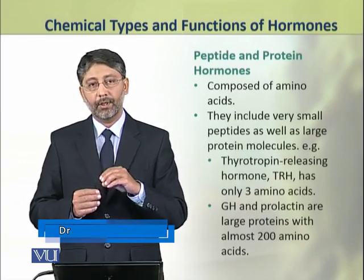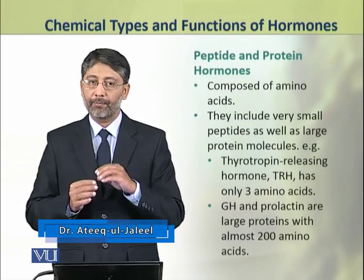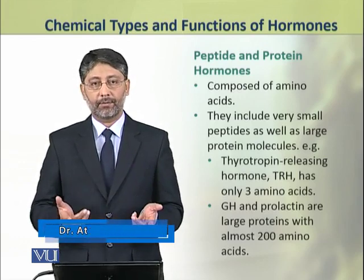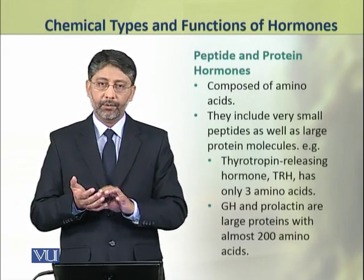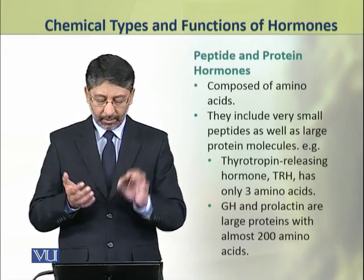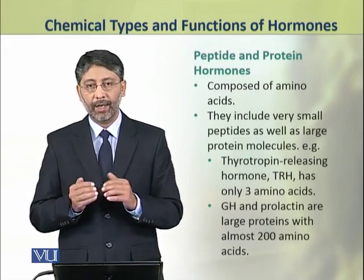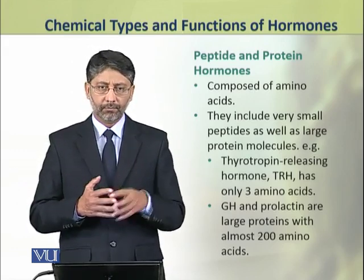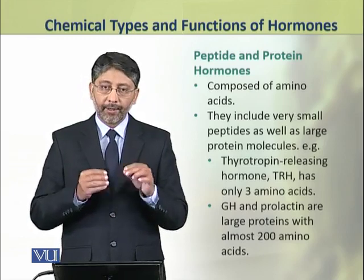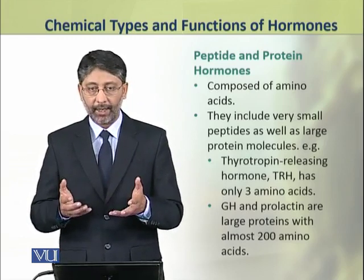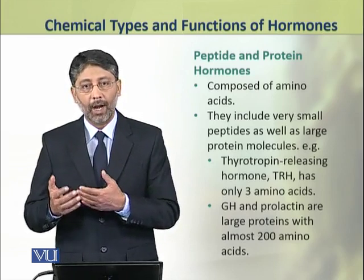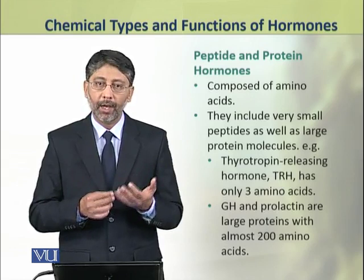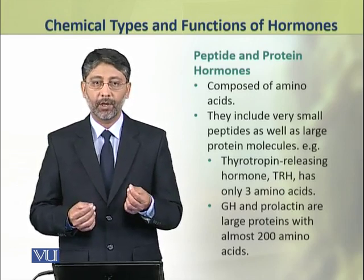First, we shall discuss the peptide and protein hormones. They are composed of amino acids and include very small peptides as well as large protein molecules. For example, the thyrotropin-releasing hormone, TRH, released from the hypothalamus, has only three amino acids in it. It is a very small peptide.